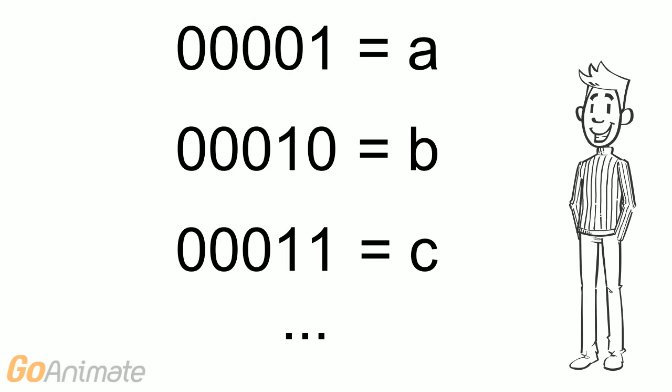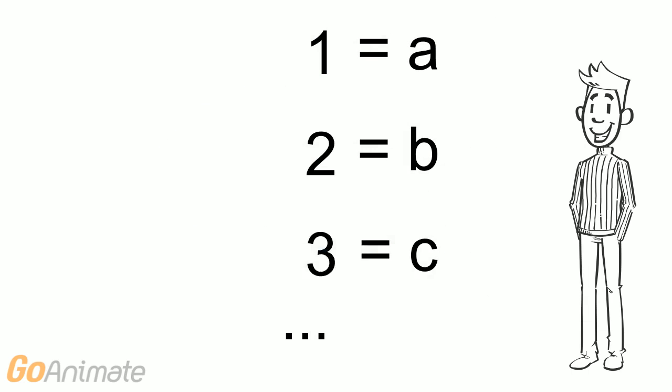It's important to understand that when we encode data, we are simply assigning meaning to numbers. It might be more intuitive to see this done with decimal numbers. But computers don't understand the decimal number system. They understand the binary number system.